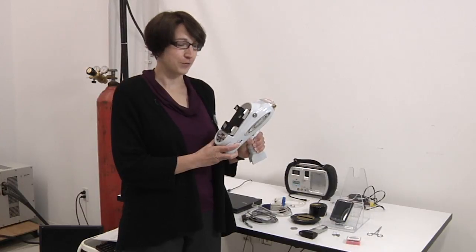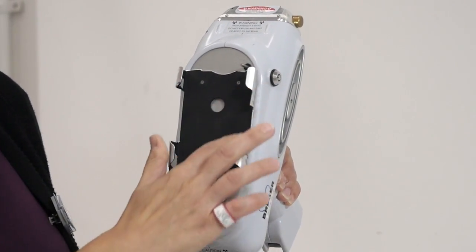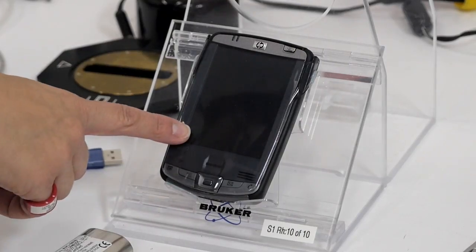This is the Bruker handheld XRF unit. This is the top or front panel. This is the place where you would insert the PDA unit.